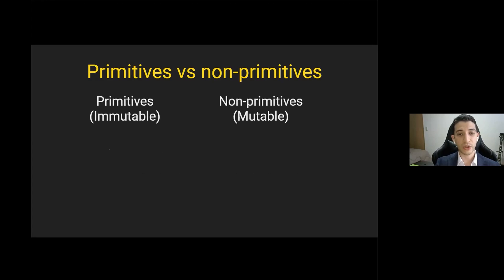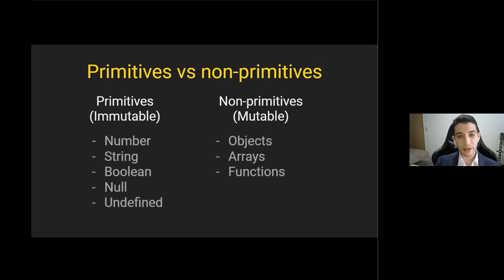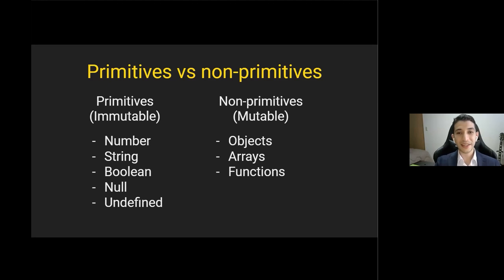Before going into these steps specifically, there is one important distinction to make: in JavaScript we have two types of data — primitives and non-primitives. Primitives are numbers, strings, booleans, null, and undefined. They are immutable, meaning that once stored in memory they cannot be changed — they can only be deleted or ignored. Non-primitives are anything that is not a primitive: objects, arrays, or functions — and these are mutable.